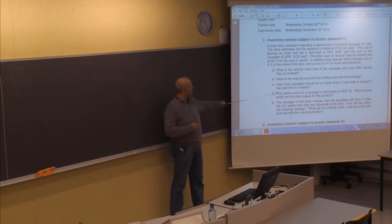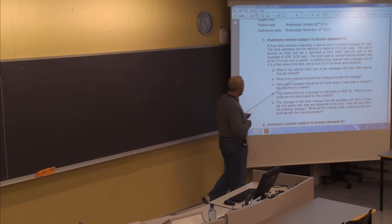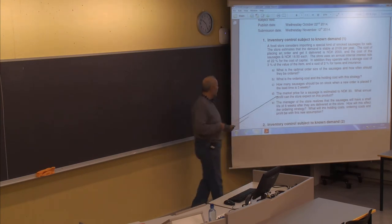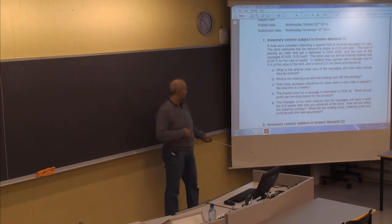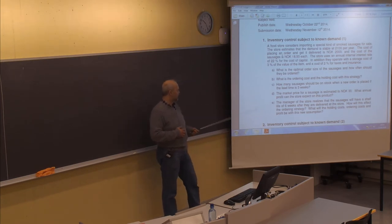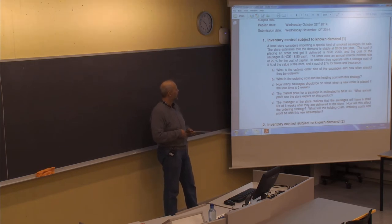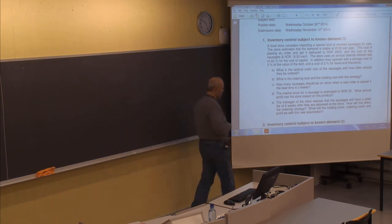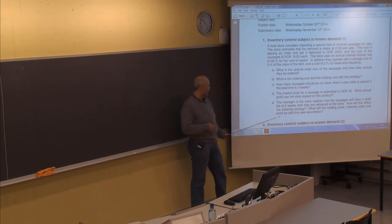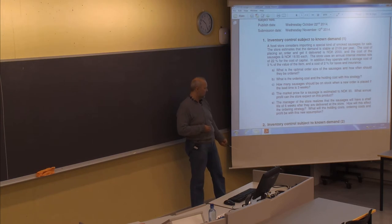The market price for the sausage is estimated at 30. What will be the profit the store will expect on this product? And on part E, the manager realizes that the sausage will have a shelf life of six weeks after delivery. How will this affect the ordering strategy? What will the holding cost, ordering cost, and the profit be with this new assumption?